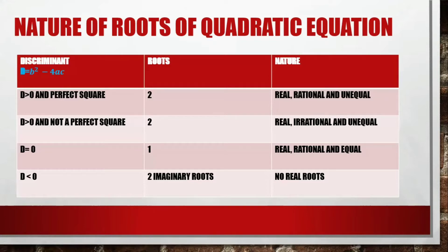Here are the cases based on the discriminant: If the discriminant is greater than zero and a perfect square, there are two roots that are real, rational, and unequal. If it is greater than zero but not a perfect square, there are two roots that are real, irrational, and unequal. If the discriminant is equal to zero, there is one real, rational, and equal root. If the discriminant is less than zero, there are two imaginary roots.